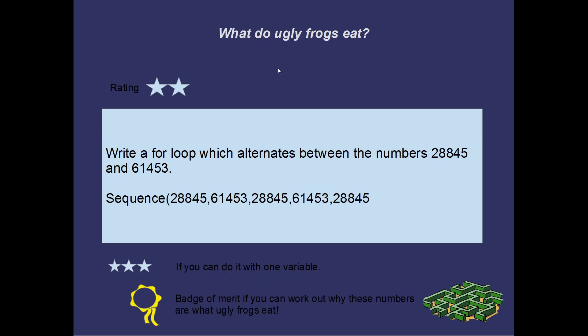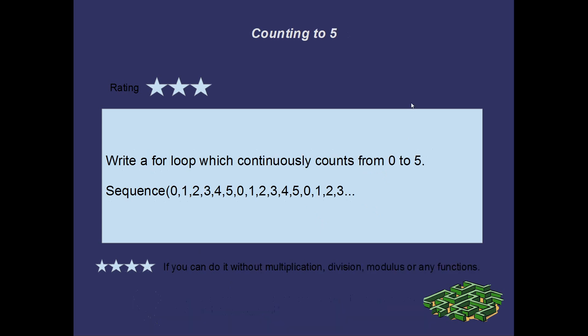Yeah, what do ugly frogs eat? Here we go, this is cool. This is worth 2 stars. The puzzle is called What do ugly frogs eat? I want you to write out a for-loop which alternates between the two numbers. 28845 and 61453. So the sequence looks something like this. Yeah, it just flips back and forth between the two. It's worth 3 stars if you can do it with one variable, so that's a little trickier. But the really special thing about this puzzle, and you get a badge of merit. You get a badge of merit for this if you can work out why this pattern is what ugly frogs eat. Yeah, just have a bit of a think about it. See if you can get a badge of merit. Why would those numbers be what ugly frogs eat?